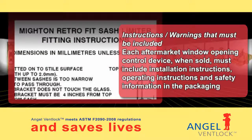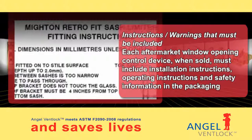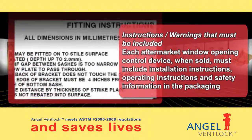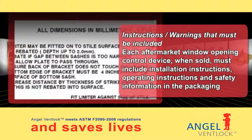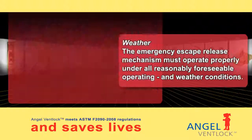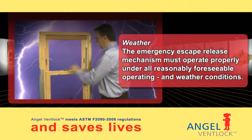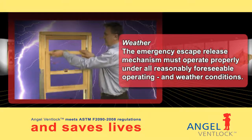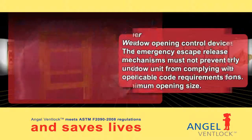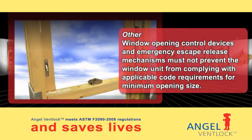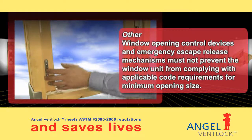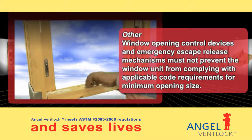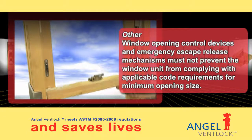Each aftermarket window opening control device, when sold, must include installation instructions, operating instructions and safety information in the packaging. The emergency escape release mechanism must operate properly under all reasonably foreseeable operating and weather conditions. Window opening control devices and emergency escape release mechanisms must not prevent the window unit from complying with applicable code requirements for minimum opening size.